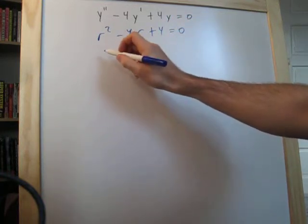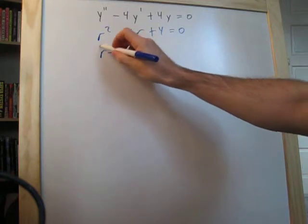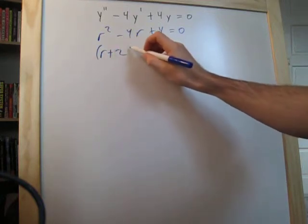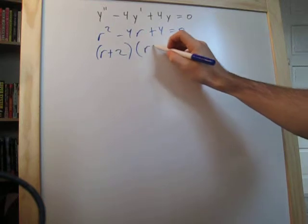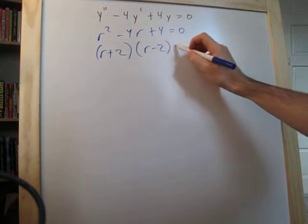Now we'll factor this out. So this becomes r plus 2, and r also equals negative 2, equal to 0.